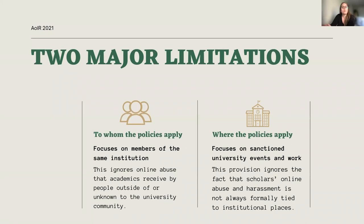Two of the most salient problems we found across the 41 policies focus on the scope of the policy, specifically who the policies apply to and where the policies apply. The first limitation emerges from the policy's main objective to protect members of the university community from other members of the same institution. While this stipulation is reasonable in the context of a college or community, it precludes perpetrators of online abuse and harassment that are unknown, anonymous, or unrelated to the institutional community. This focus poses serious problems because the online abuse that academics receive often involves people outside of or unknown to the university community.